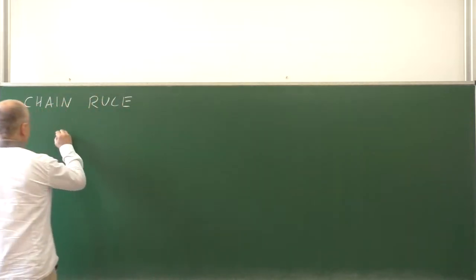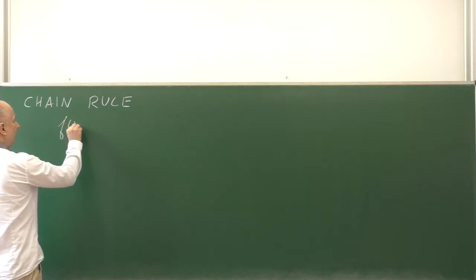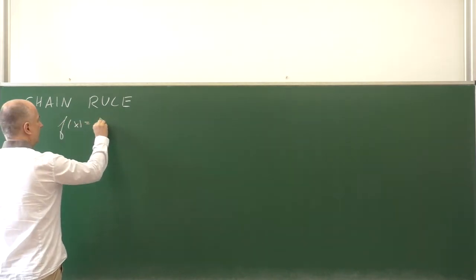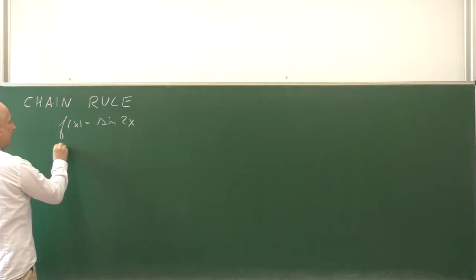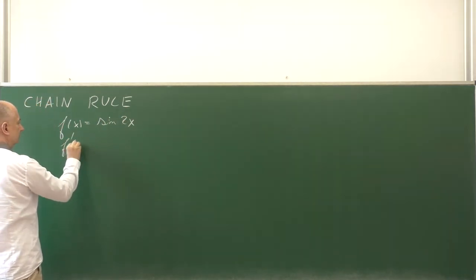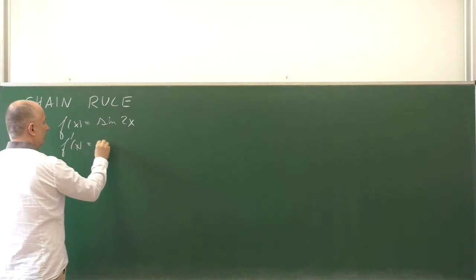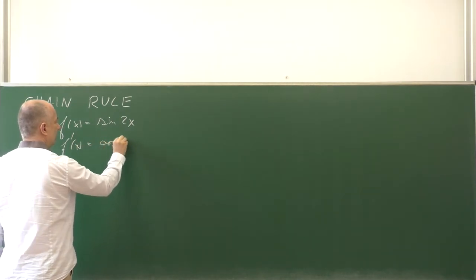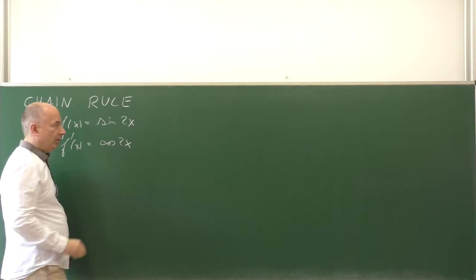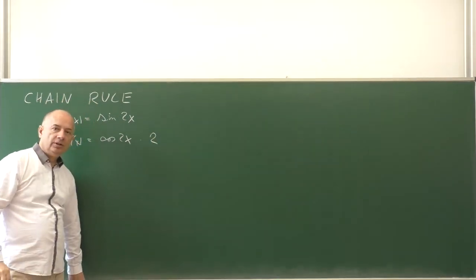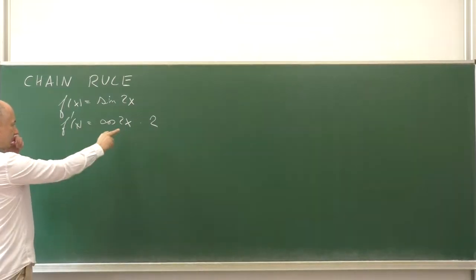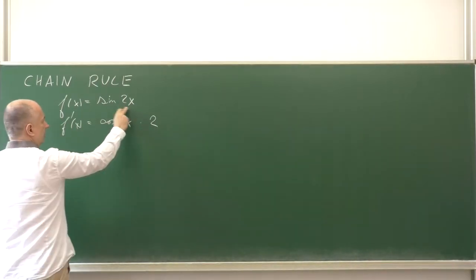Let me start with a simple example. If we have the function f(x) = sin(x²), then the derivative is: derivative of sin is cosine, we copy the argument, and we multiply by the derivative of the inner function x², which is 2x.